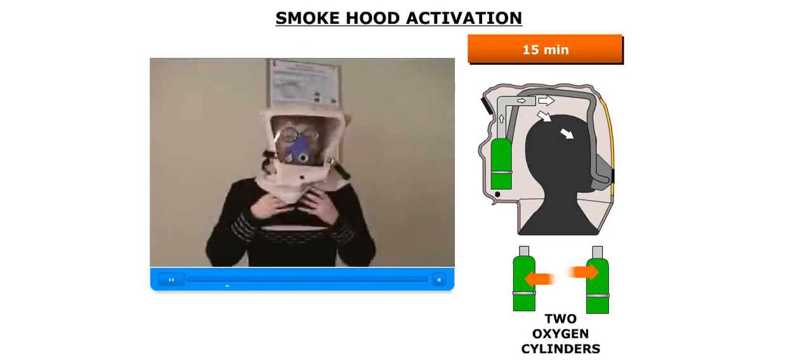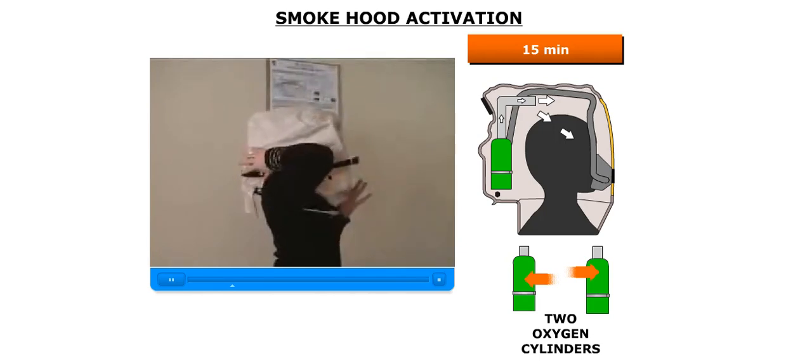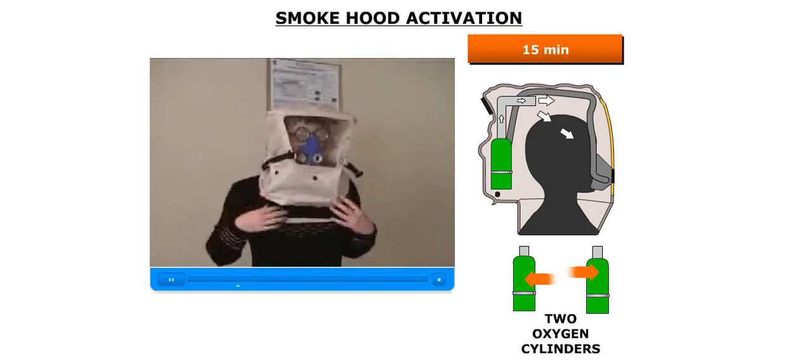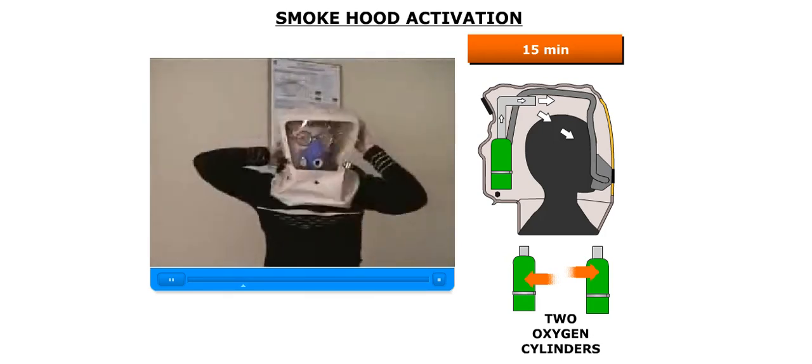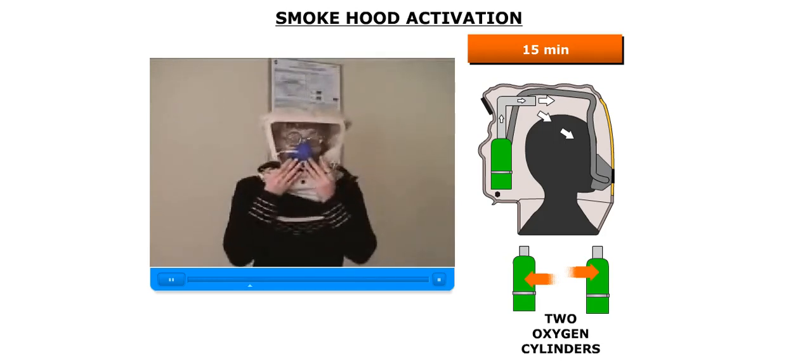When the neck seal is positioned at the neck and the KO2 canister is resting on the nape of the neck, remove the hands, checking to see that clothing is not trapped in the seal and that hair does not protrude between the seal and the neck. If this is not accomplished, smoke or fumes may enter and oxygen may escape.